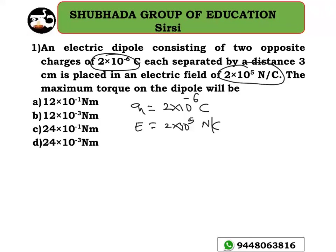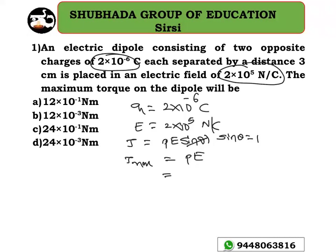The question is to find the maximum torque. As we know, torque τ = P × E × sin θ. For maximum torque, sin θ = 1, so maximum torque = P × E, where P is the dipole moment.